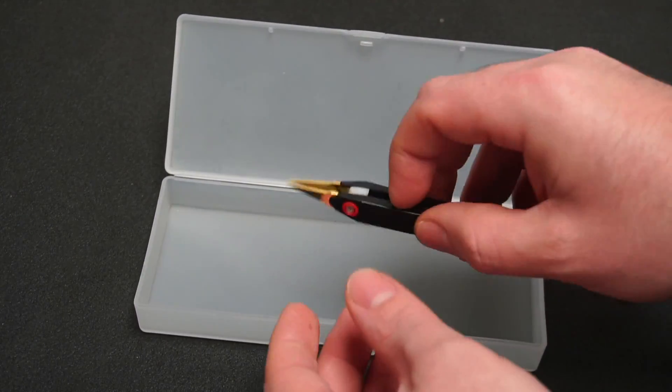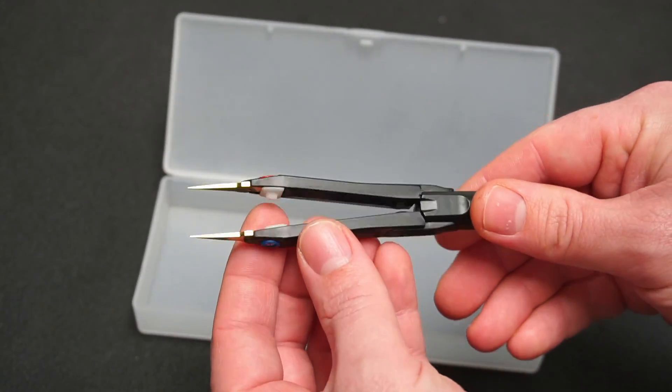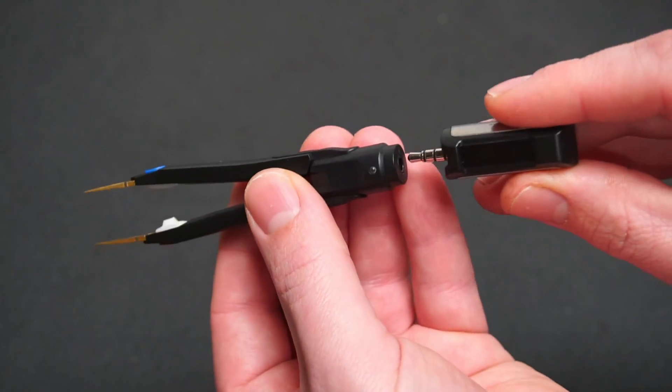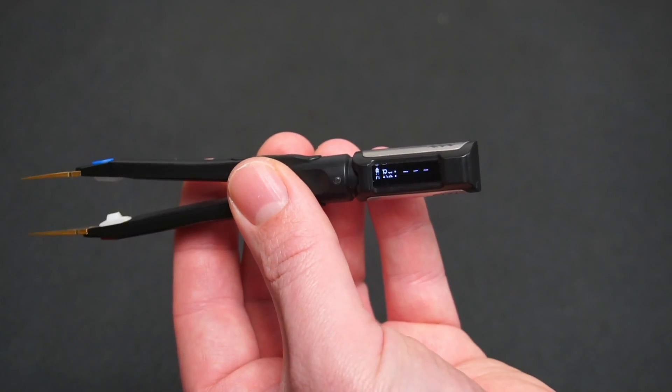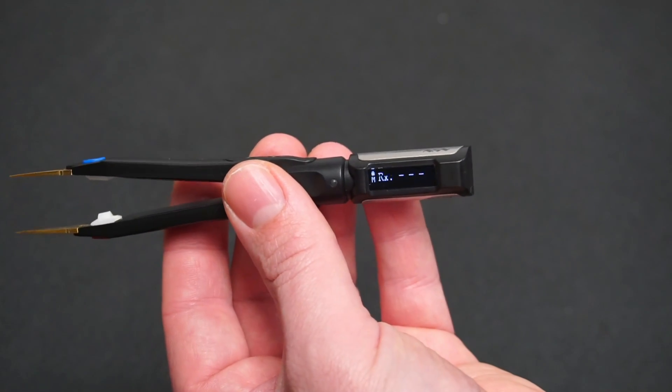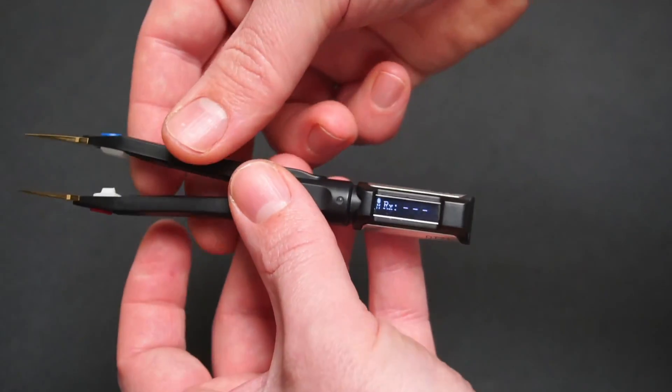The rechargeable battery is located in the body of the tweezers. To get things started, simply plug the controller into the tweezers. During startup, the screen will display the current firmware version. After startup, the tweezers will be in resistance mode.